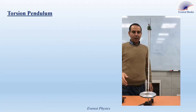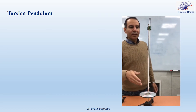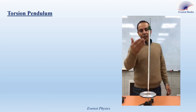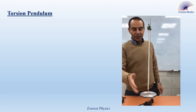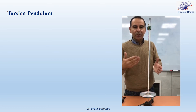Torsion pendulum. We started before with the horizontal elastic pendulum. Now we are going to study another oscillator called the torsion pendulum. A torsion pendulum is formed by a torsion wire fixed from its upper end and connected from its lower end to a rigid body. The rigid body could be a disc, a rod, etc.